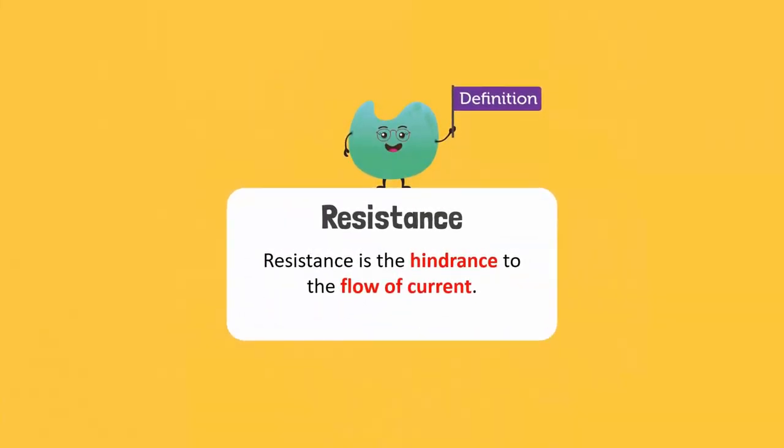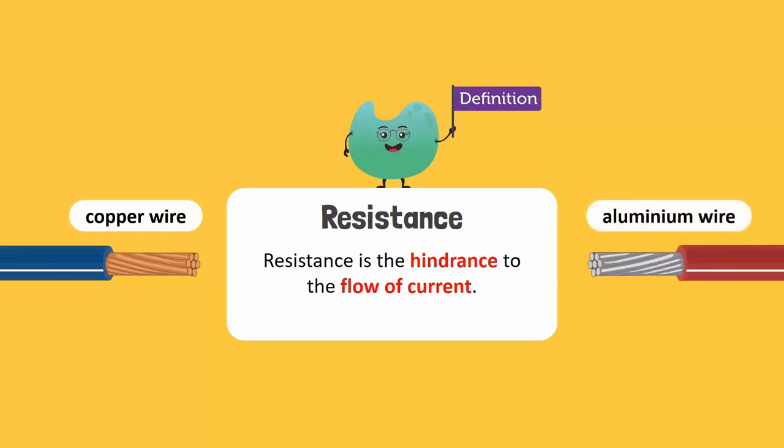Resistance is the hindrance to the flow of current. The resistance to the flow of current by each conductor is different. Current flow is better in a conductor like copper wire compared to aluminium wire. The unit of resistance is the ohm, represented by the Greek letter omega.